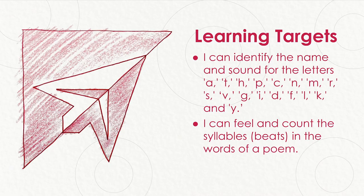There are two learning targets for our lesson today. The first target says I can identify the name and sound for the letters A, T, H, P, C, N, M, R, S, V, G, I, D, F, L, K, and Y. And our second target says I can feel and count the syllables or beats in the words of a poem.